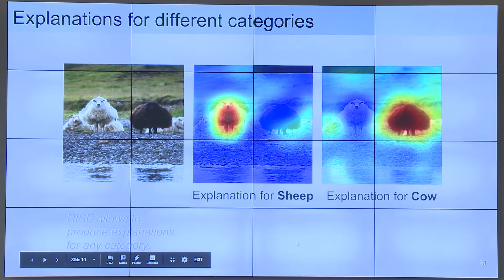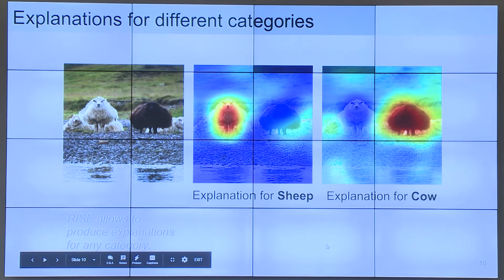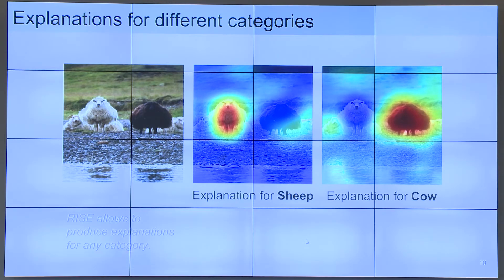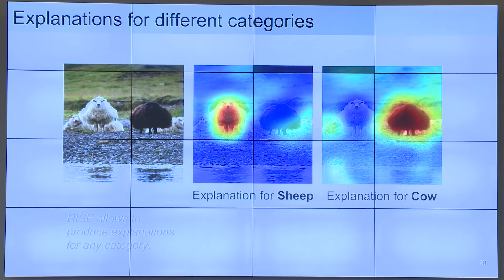Running this process once for the model, we can actually get explanations for different classes, not just one. For example, we found that the model had learned to categorize only white sheep as sheep, and all the black sheep looked like cows to the model. This is one example where saliency maps can come useful to detect bias in models.